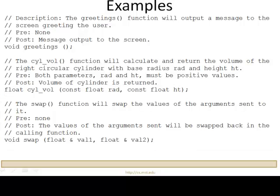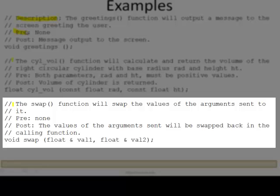The swap function. And again, as you can see, what I have here is, you can write description or not write description. There's no set format on that. And some people like to write pre and some people like to write precondition, write it out in full form of the word. So the swap function will swap the values of the arguments sent to it. Precondition? None. Values of the arguments will be swapped back in the calling function.